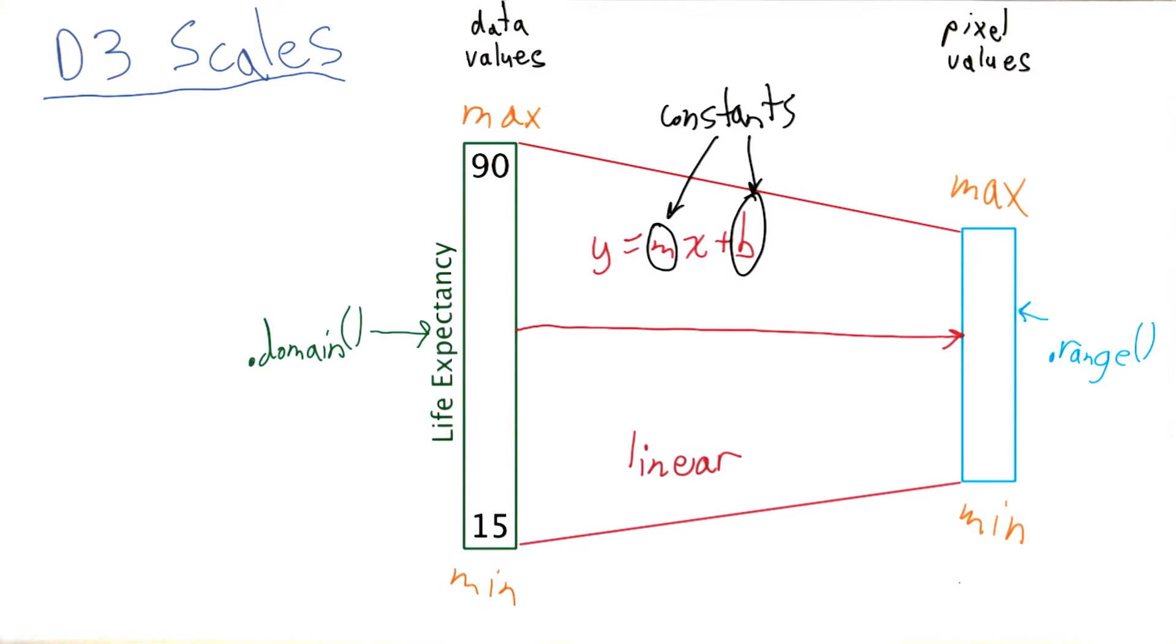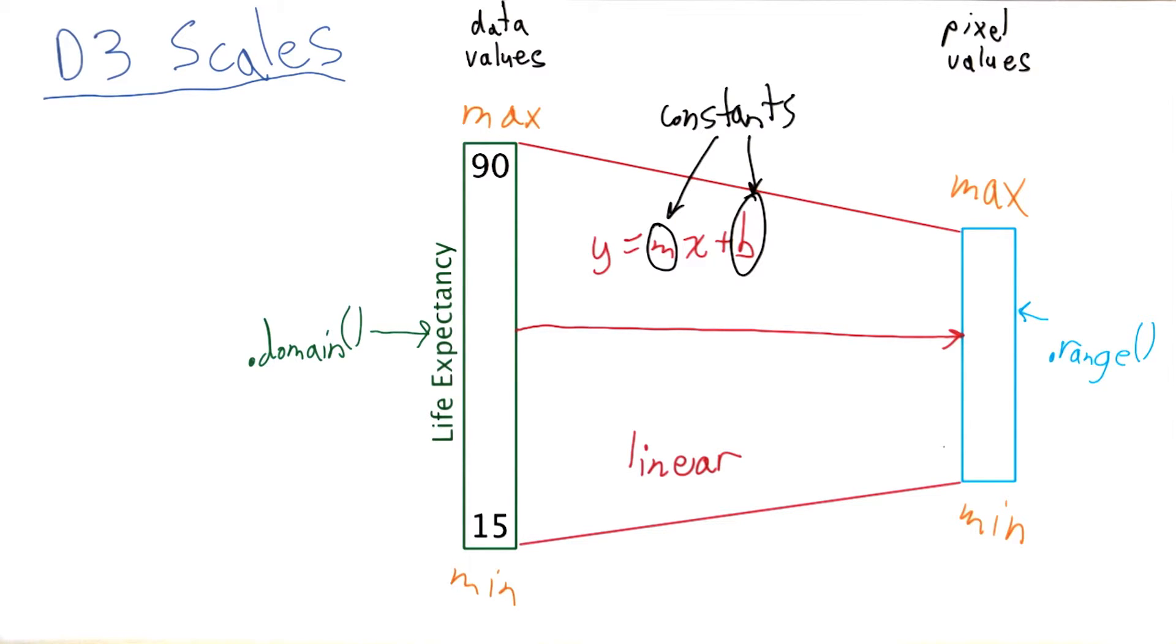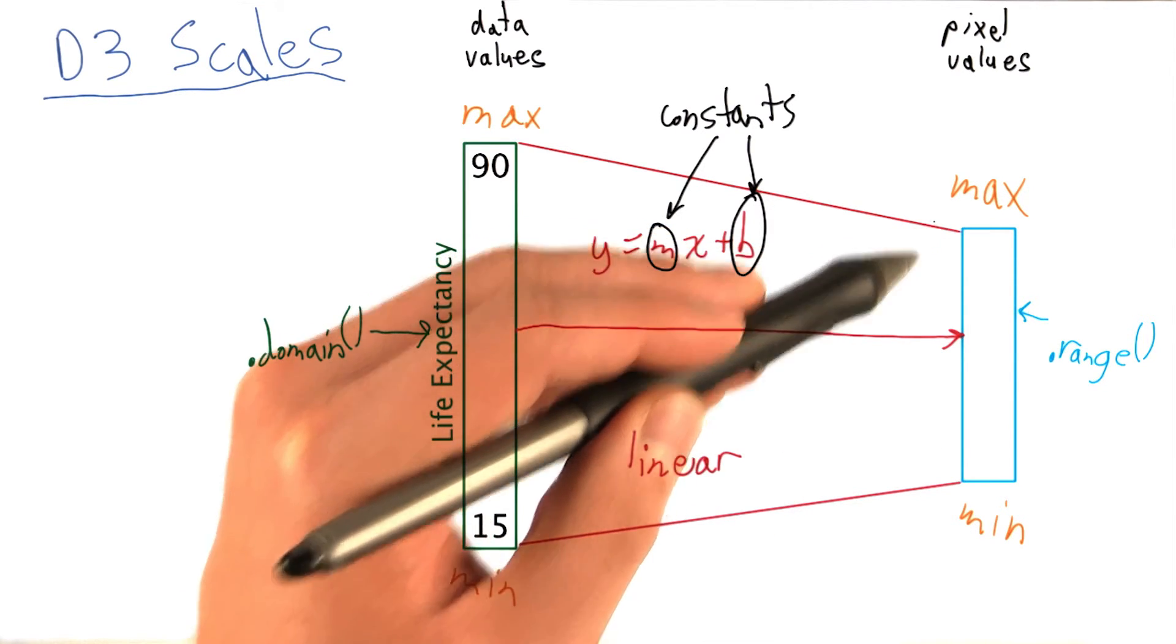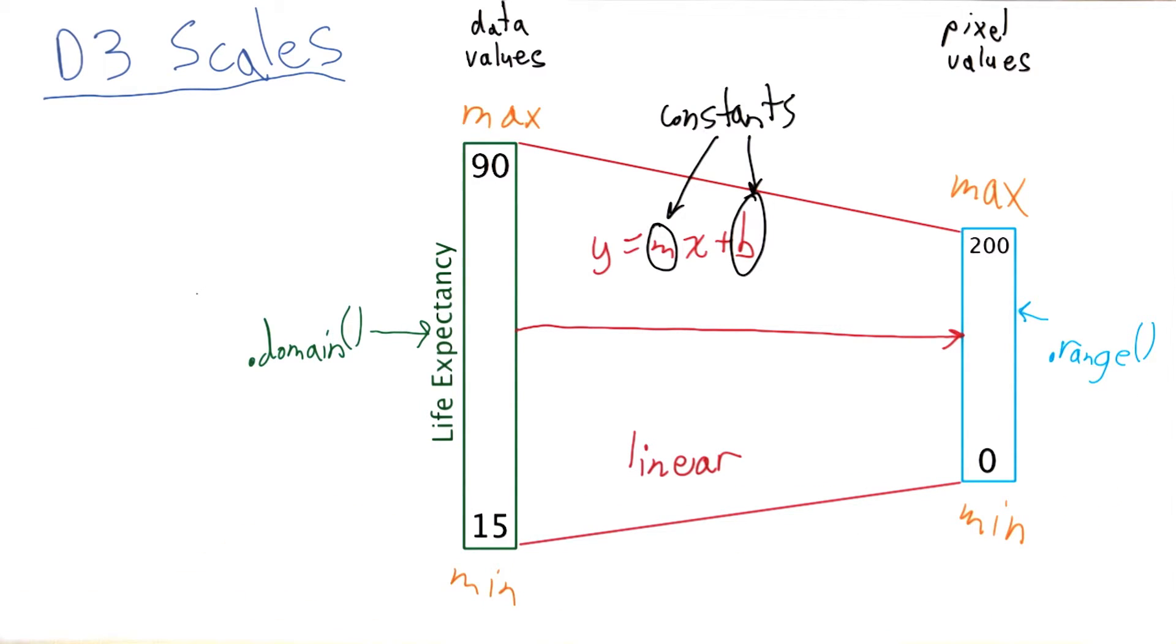So far, we haven't actually specified the values we want to map our domain into. For the live coding example we will get into, we will simply pick a max and min for the range. In our case, we can simply set a max and min of where we want our output range to be.